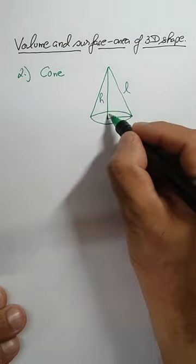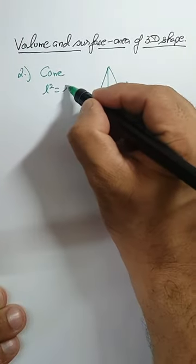Now we know that this is a right angle triangle and applying the Pythagoras theorem, so L square will be equals to r square plus h square.